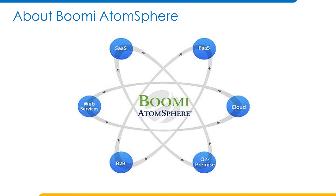In the build section, we have visual tools to specify the integration logic to communicate between different applications. By using deploy, we can deploy the integration process built in the building phase to a runtime engine called Atom. This Atom allows you to run the integration process on-premise or in the cloud. Boomi supports two deployment models: cloud deployment and on-premise deployment. In the cloud deployment model, the endpoints are cloud-based and we can deploy Atom onto Boomi Atom Cloud. In the on-premise deployment model, the endpoint is within a corporate network. By using manage, we can monitor the health of the integration process.